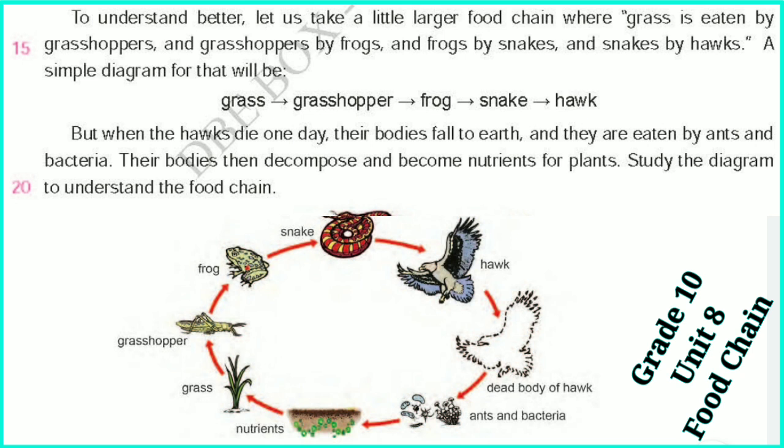A simple diagram for that will be: Grass → Grass Chopper → Frog → Snake → Hawk.